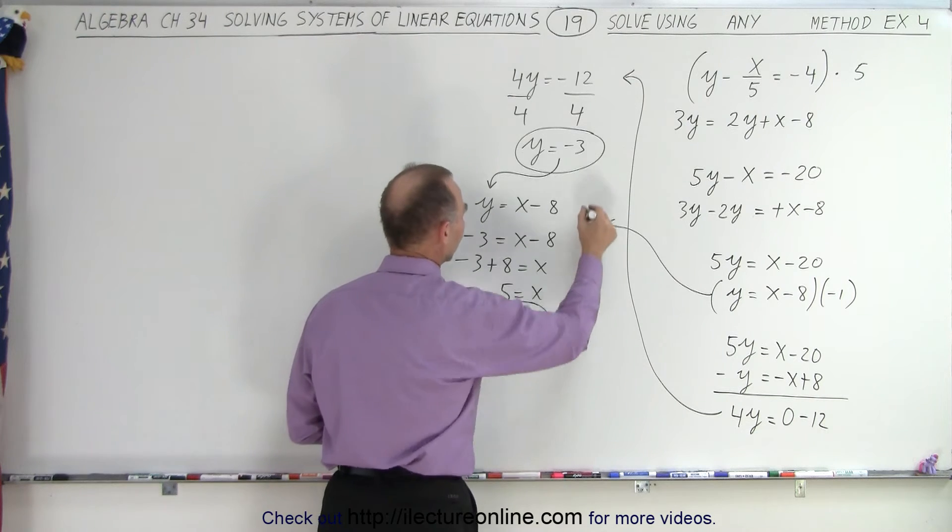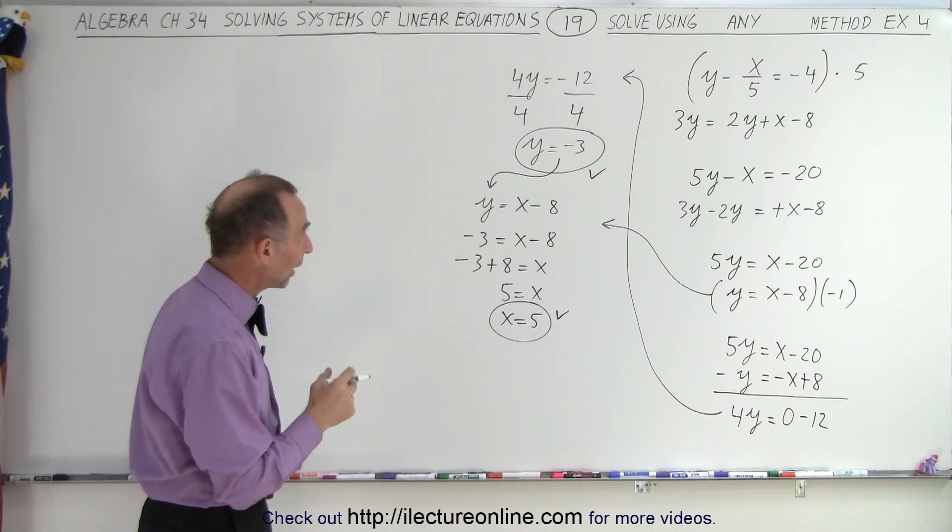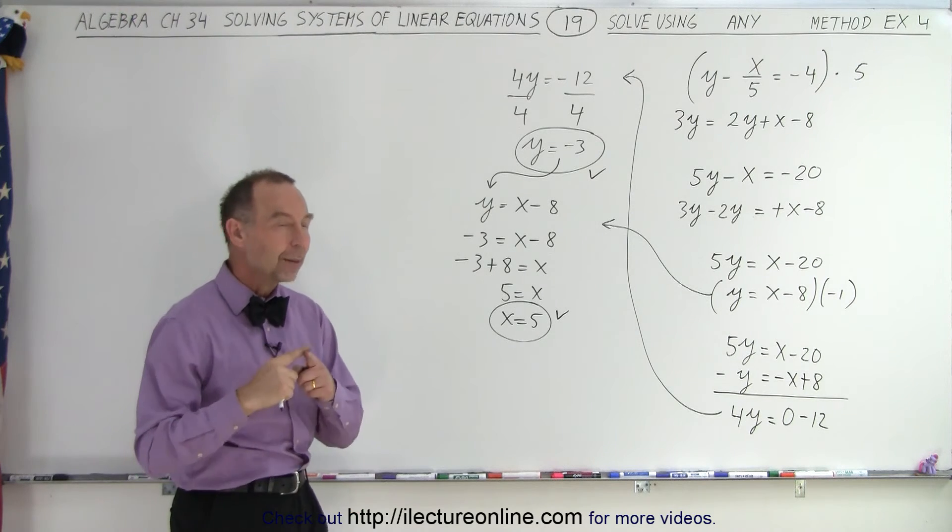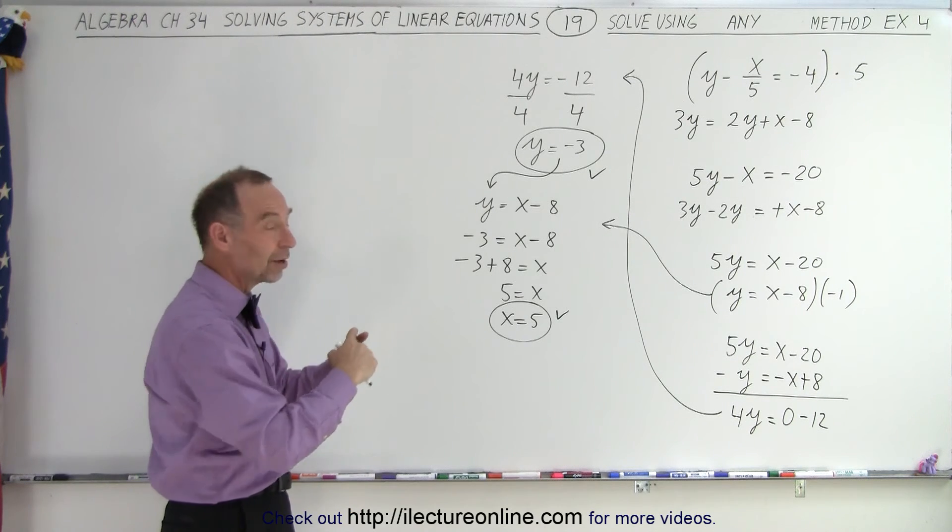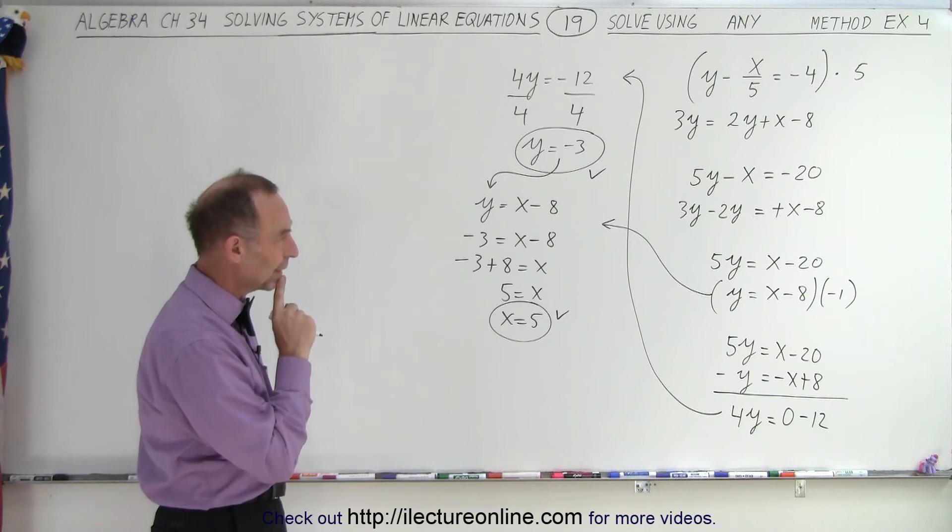And there's my second value. So here are the two numbers. x equals 5, y equals negative 3. That's where we have a common solution. That's where the two equations cross. That's the point of intersection, when x equals 5 and y equals negative 3.